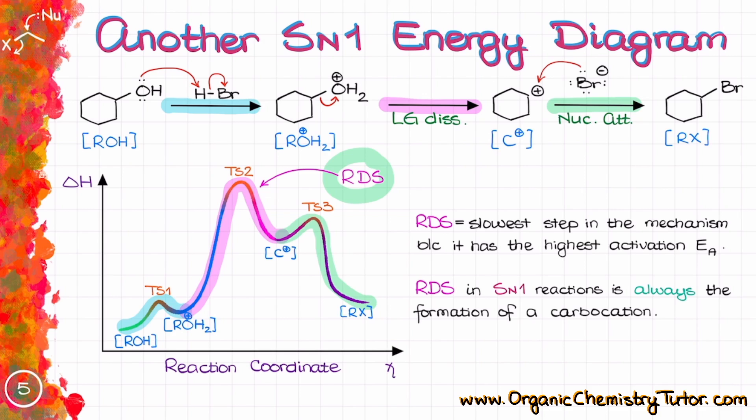In both examples that we have already seen in this video today, the RDS, the rate determining step, was the formation of the carbocation. And as the general rule of thumb, you can remember that the rate determining step is typically going to be the step in which we are going to be forming the least stable intermediate in the reaction.